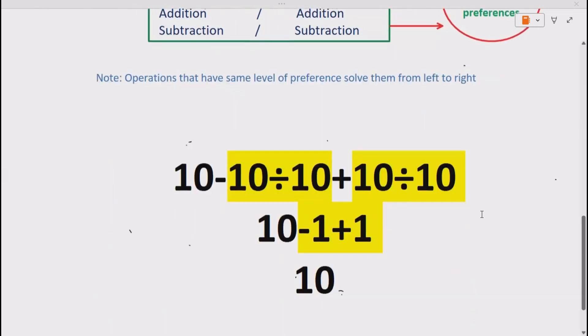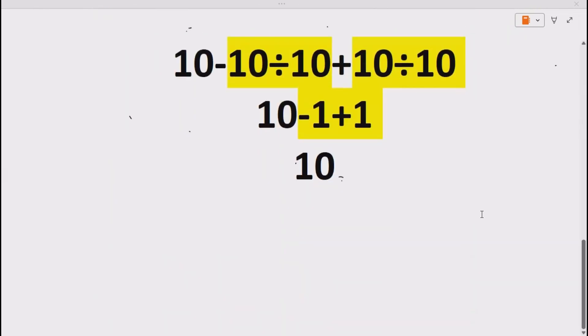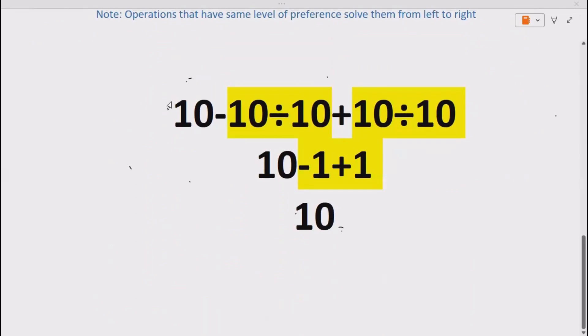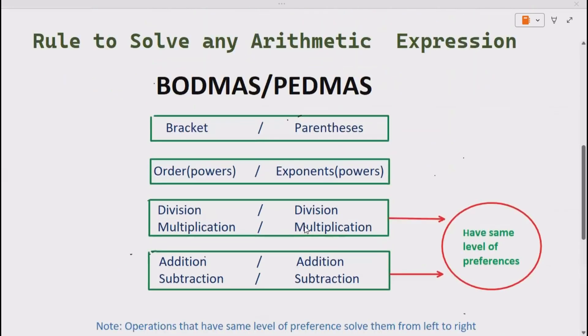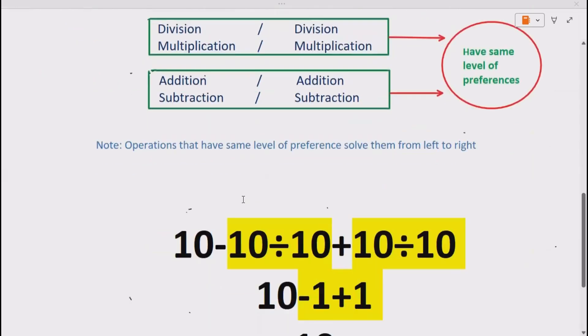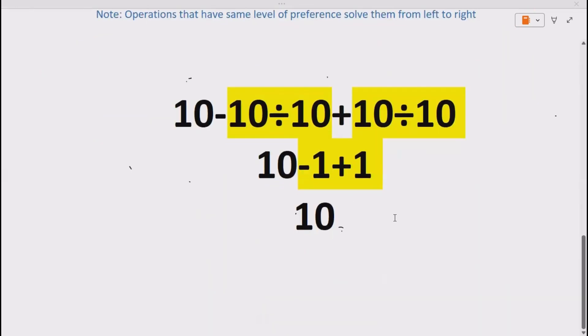Now, let's see how we can solve our question using BODMAS or PEDMAS. So, we are given 10 minus 10 divided by 10 plus 10 divided by 10. According to BODMAS or PEDMAS, we know that we have to do division first because there is no bracket and power.